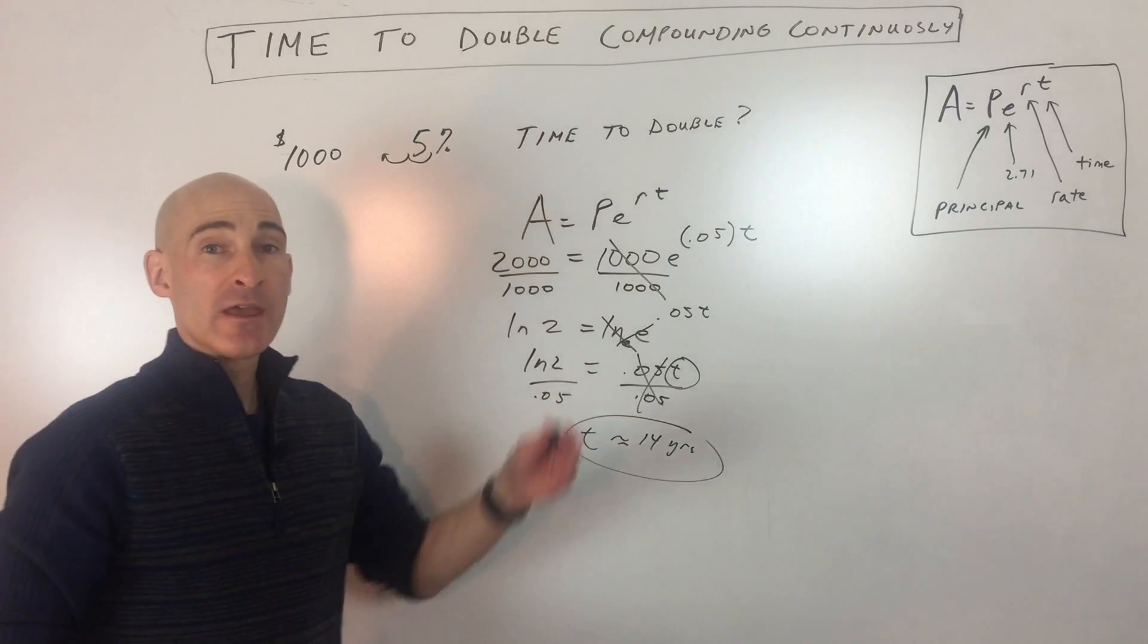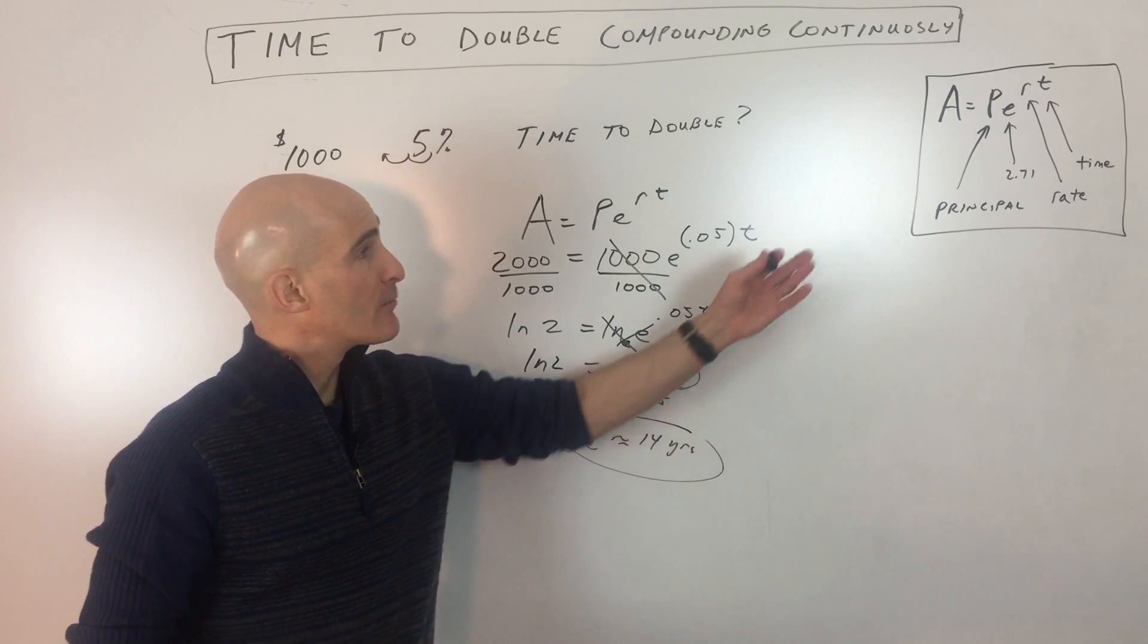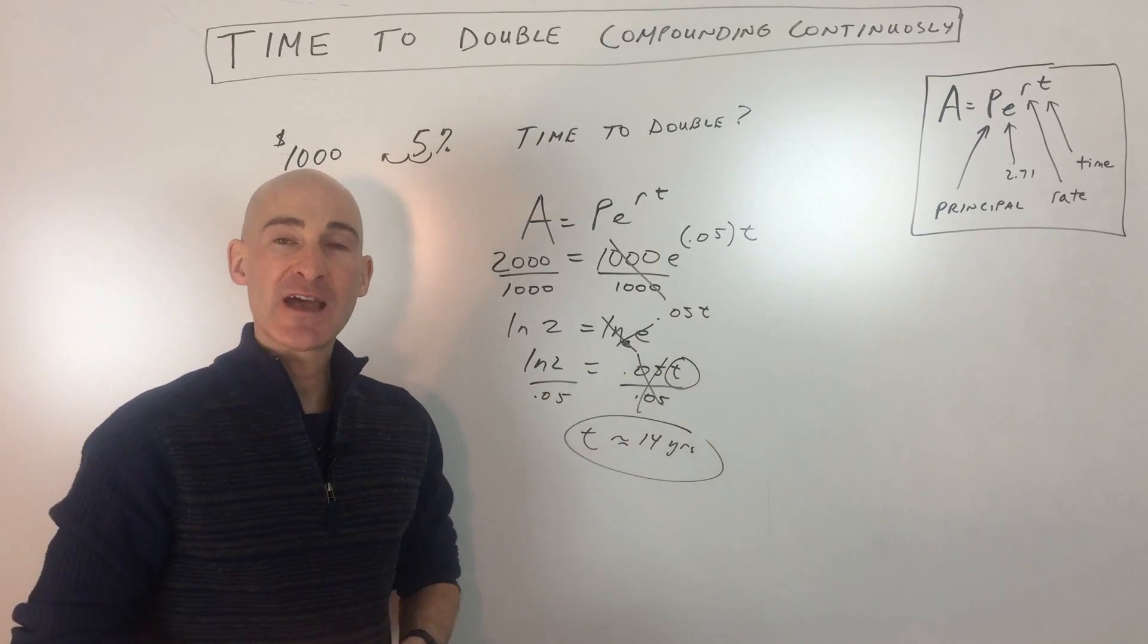I'm just going to approximate it as 14 years. That would be your time to double if it's compounding continuously at 5%. I hope this video helped you to understand how to work with the PERT formula a little bit better and figuring out time to double.